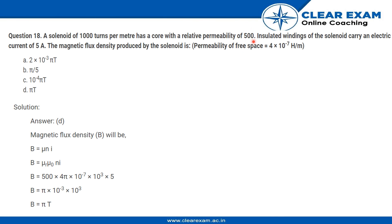And μᵣ is 500 as you can see. So B is π × 10⁻³ × 10³, which is π tesla. Thank you.